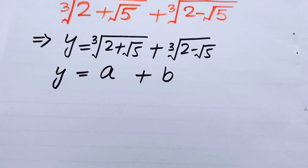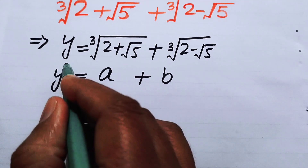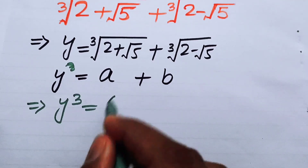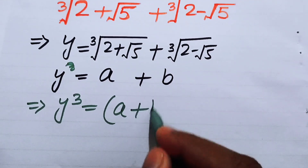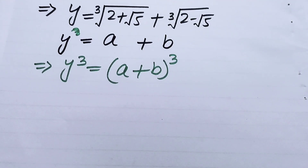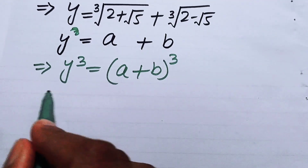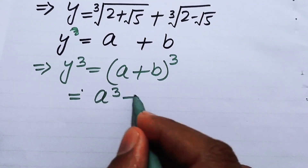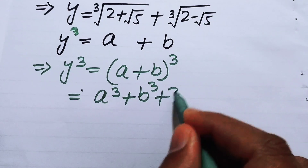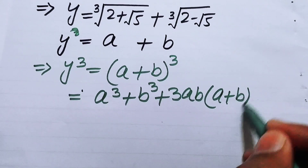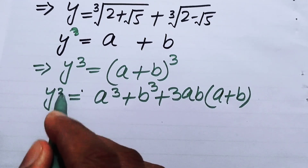In the next step we take the cube of both sides of this equation. We get y cubed equals (a plus b) cubed. We apply the cubic expansion formula on the right-hand side and get a cubed plus b cubed plus 3ab(a plus b).